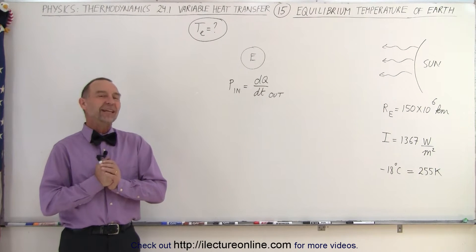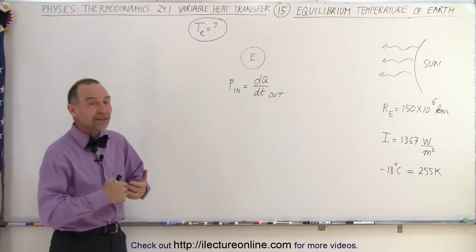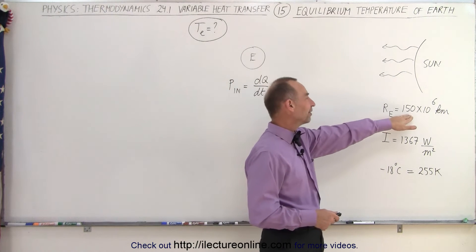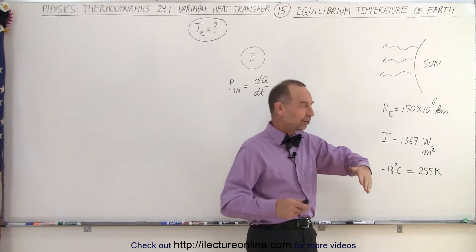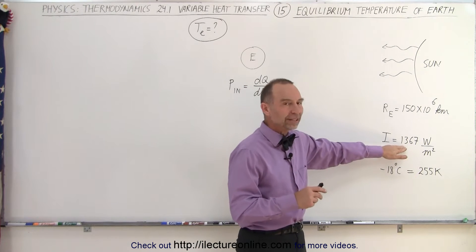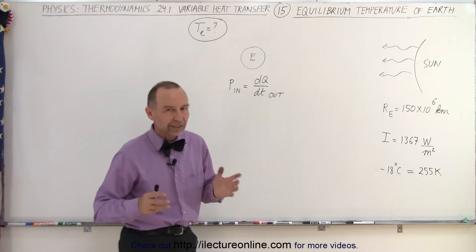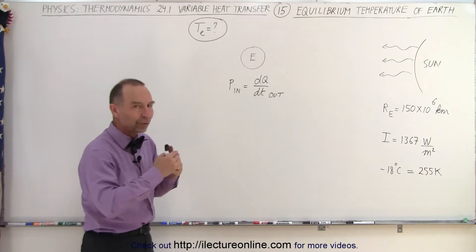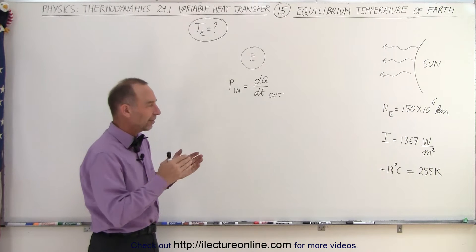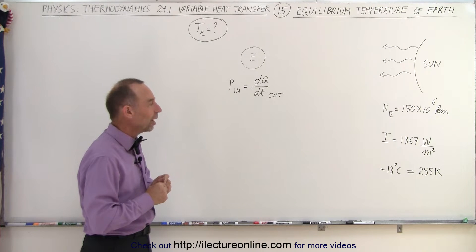Welcome to our lecture online. Let's take a look at the Earth and try to calculate the equilibrium temperature of the Earth with the amount of energy it receives from the Sun. The Earth is at a distance of about 150 million kilometers on average, and the intensity of sunlight it receives is about 1361 watts per square meter. It varies between roughly 1300 and 1400 because the Earth has an elliptical orbit — sometimes a little closer, sometimes a little farther away — but on average it's about 1367 watts.